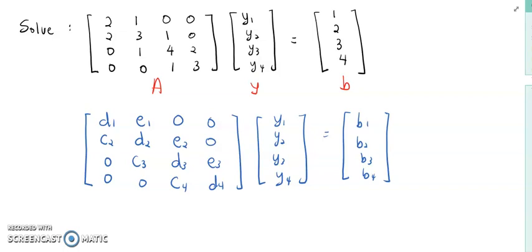Let's try one example. Solve this system. Now you need to find the Y value. If you can see here, the A matrix is a tridiagonal matrix. So to solve this system, you can use Thomas' algorithm. In Thomas' algorithm, we know that A·Y = B is in the form of the matrices here.